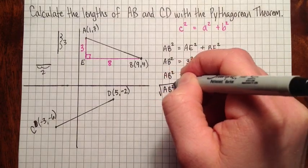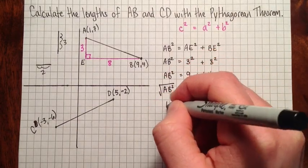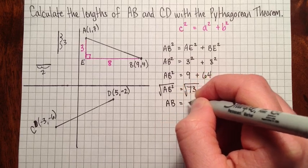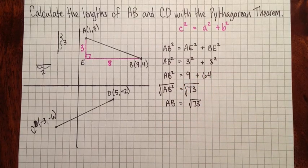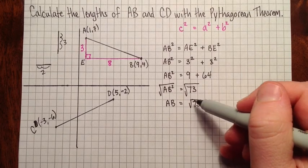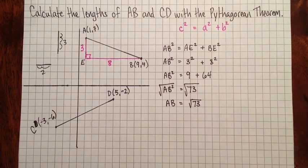And then to get the length of AB, we'll take the square root of both sides. AB equals root 73. And in some context, depending on what you're doing with the problem, you might want to find a decimal approximation of this.